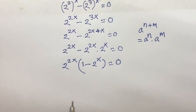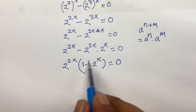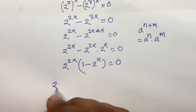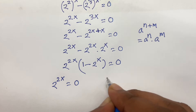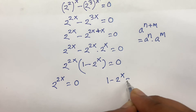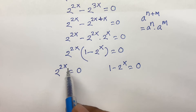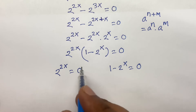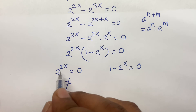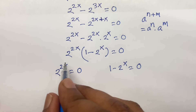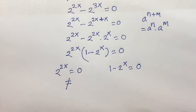Then, I can say this factor is equal to 0 and this factor is equal to 0. So, 2 to the power 2x is equal to 0, and 1 minus 2 to the power x is equal to 0. Look, 2 to the power 2x is not equal to 0, because 2 to the power any number will find a value, but not 0. So it is not equal.